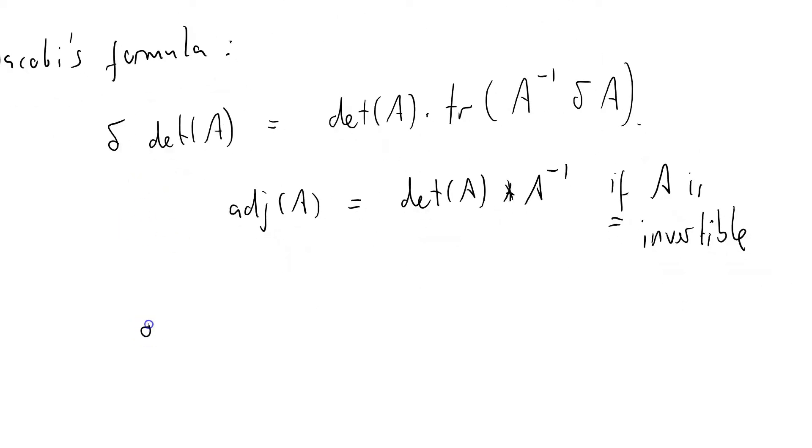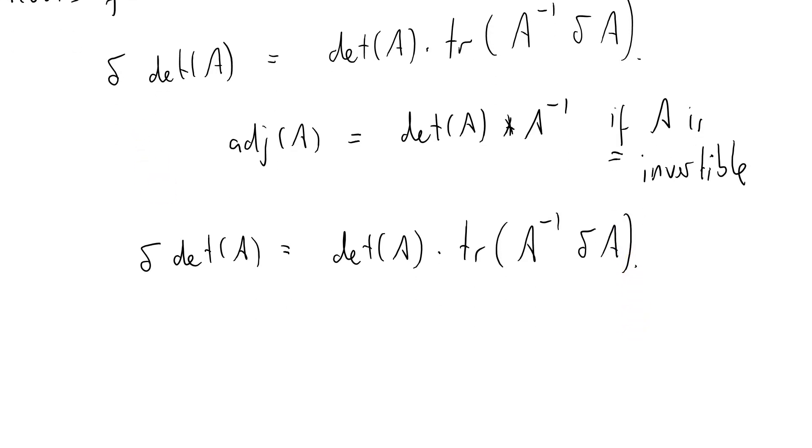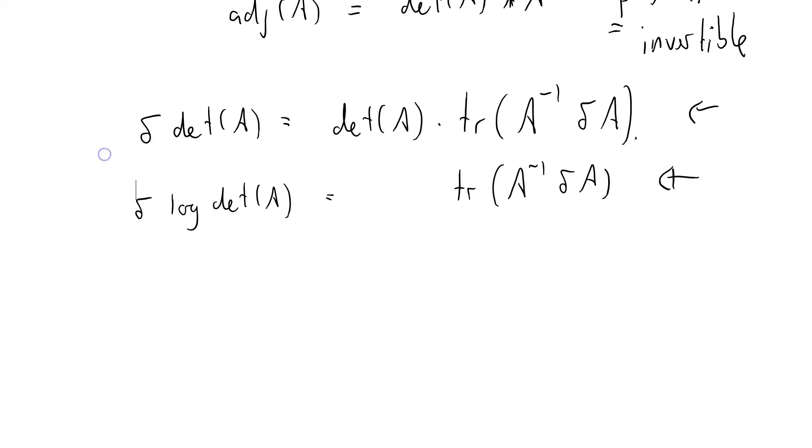So, delta of the determinant of A equals the determinant of A times the trace of A minus 1 delta A. What this means in practice, you quite often see delta of the log of the determinant of A equals just this bit, trace of A minus 1 delta A. This is the one that you see in linear algebra more often, or at least I've encountered it. This one is, well it's true, but it's not as useful as this in general. But I'm going to ignore that. And I'm not going to prove it because it's proved on the Wikipedia page, but I'm going to demonstrate that it's true numerically.